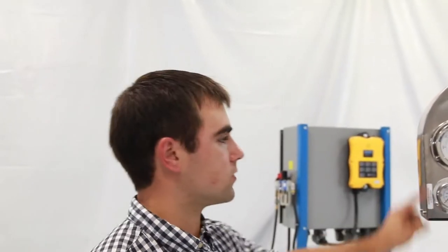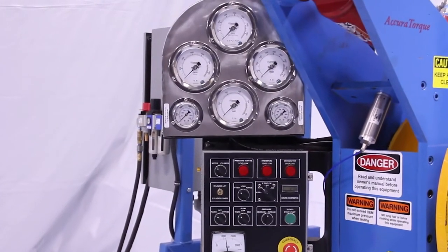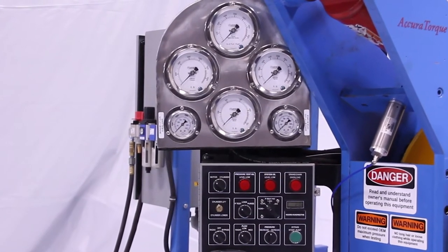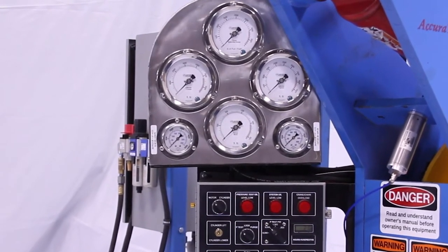Now we've got the gauge cluster. Out of these gauges, we've got four that have to do with the torque of the machine and two that have to do with pressure testing.